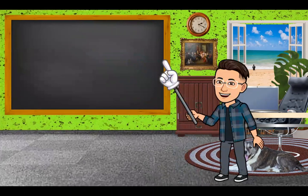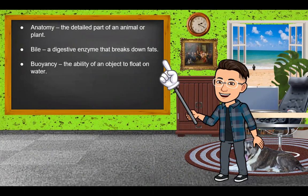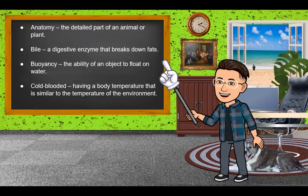The first terminology is anatomy, which means the detailed study of the parts of an animal or plant. Next is bile, a digestive enzyme that breaks down fats. We also have buoyancy, which is the ability of an object to float on water. Next is cold-blooded, meaning having a body temperature that is similar to the temperature of the environment.